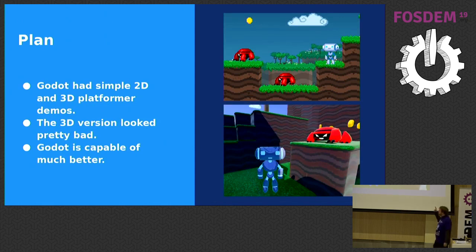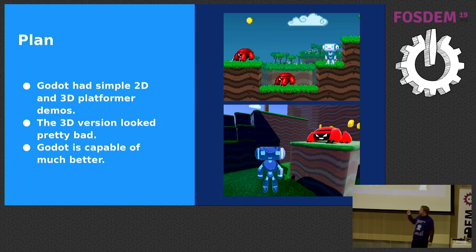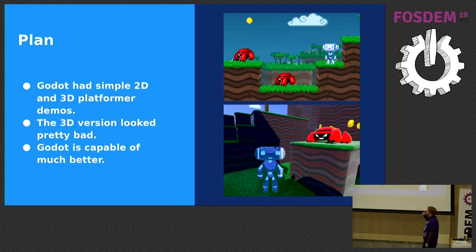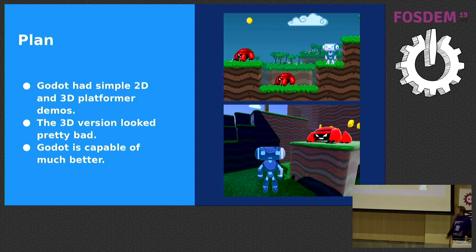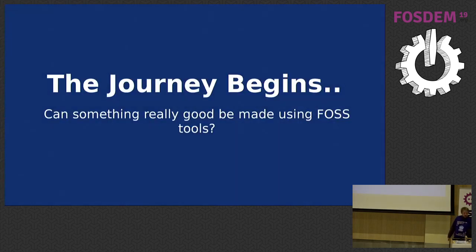Our plan started with these simple 2D and 3D platformer demos. Godot is a game engine where 2D and 3D are like separate engines in one — they work mostly the same but with different APIs. We have a platformer demo that is almost the same code in 2D and 3D, so you can migrate from 2D to 3D. But our 3D platformer demo didn't look very nice. I made the art for the 3D one, but I'm really a terrible 3D artist.